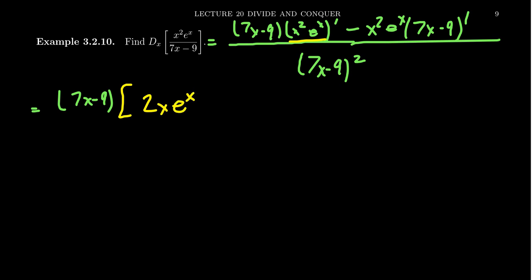Then we multiply that by e to the x. Then we're going to add to that x squared times the derivative of e to the x, which we know the derivative of e to the x is, in fact, just e to the x itself.